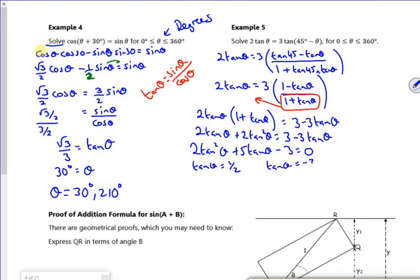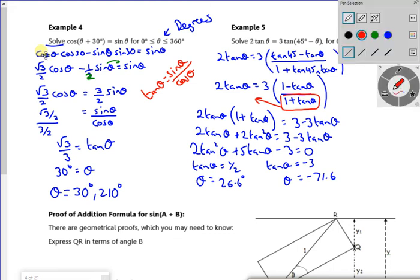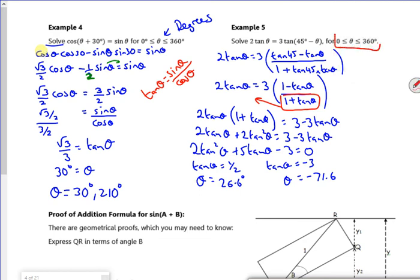Tan theta is minus 3. So that gives me theta of 26.6 degrees. That gives me theta of minus 71.6. Look where I'm after. I've got to be between 0 to 360.